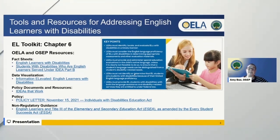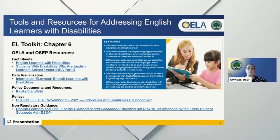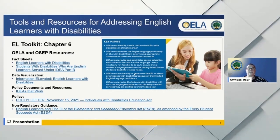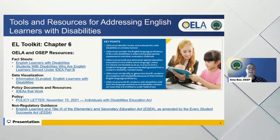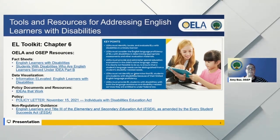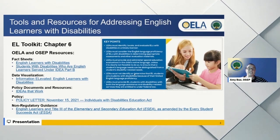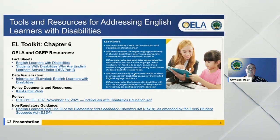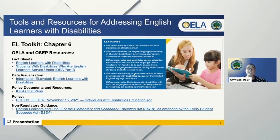The English learners with disabilities fact sheet presents data on English learners with disabilities who are enrolled in U.S. schools. It also compares the percentages of English learners and non-English learners who are identified as having a disability and addresses exit rates. Our OSEP Fast Fact sheets explore IDEA Section 618 data with a specific lens on one of the fastest growing populations of students with disabilities served under the IDEA.